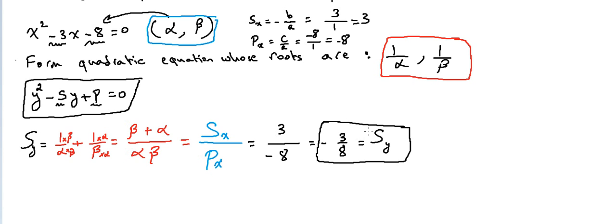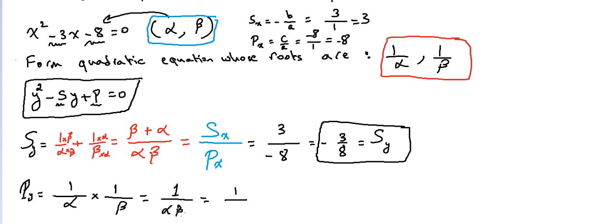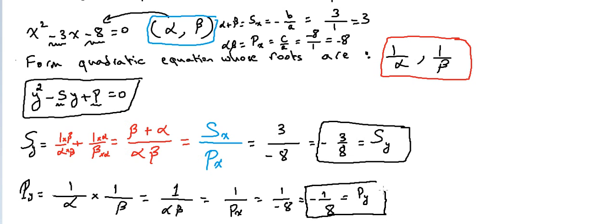We still need the product of the new equation, Product_y. The roots of the new equation are 1/alpha and 1/beta, so Product_y = (1/alpha)×(1/beta) = 1/(alpha·beta). Since alpha·beta is the product of the original equation, which equals −8, we get Product_y = 1/(−8) = −1/8.